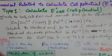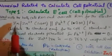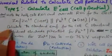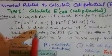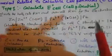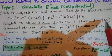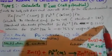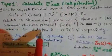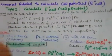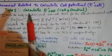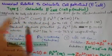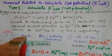Zinc converts to Zn²⁺ at 1.0 mole, whereas Pb²⁺ converts to lead at 1.0 mole. We need to calculate the standard EMF for the cell. The standard electrode potential of Pb²⁺/Pb is −0.126 volt, and Zn²⁺/Zn is −0.763 volt. The concentration values are given; we just need to calculate the standard EMF of the cell. Zinc is taken as anode and lead as cathode.